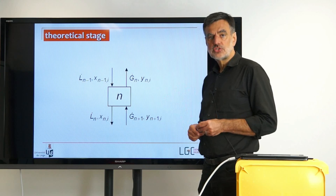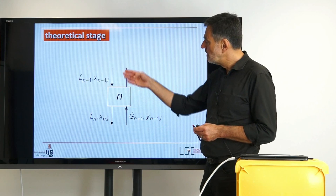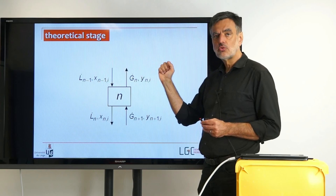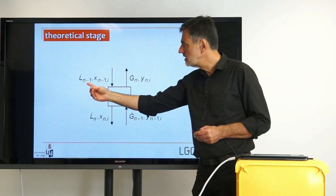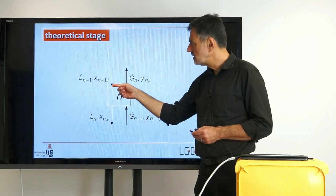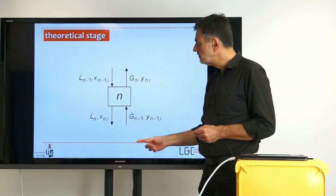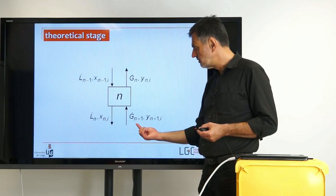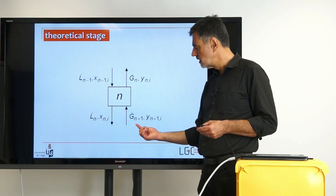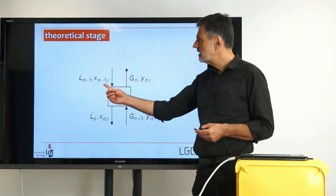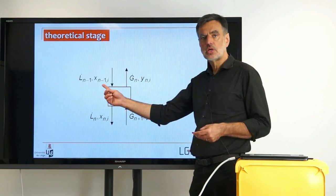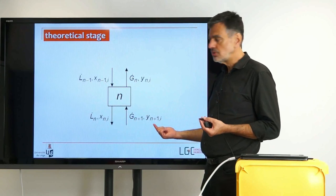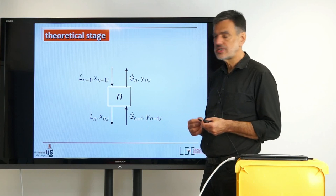We count the stages from top to bottom, so above that we have the stage n-1, so that the liquid flow rate coming from the stage above carries that index n-1: L-dot n-1. And from the stage below, which carries the stage index n+1, we have the vapor flow rate G-dot n+1, with the corresponding compositions x_(n-1) of component i, and y_(n+1) of component i — of all components, actually.